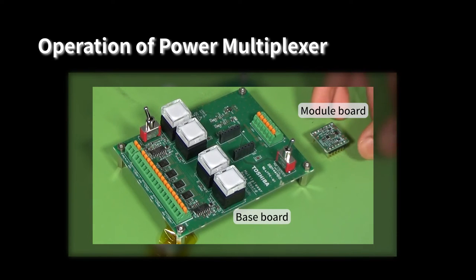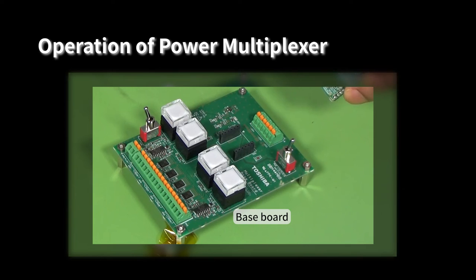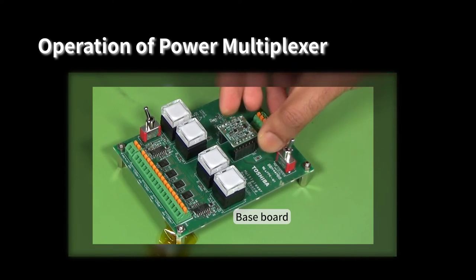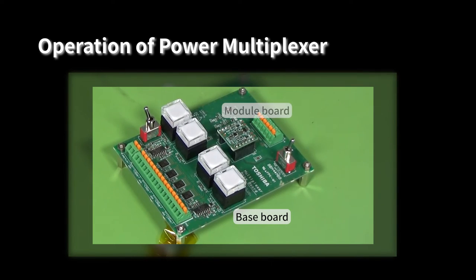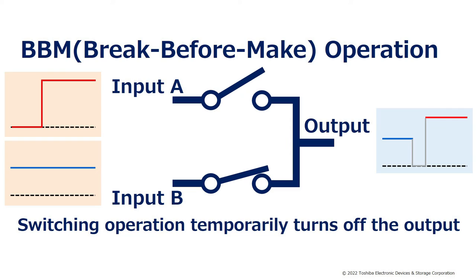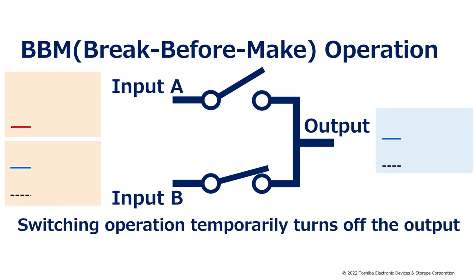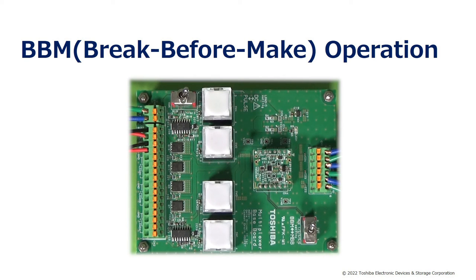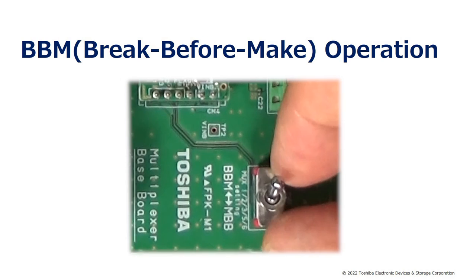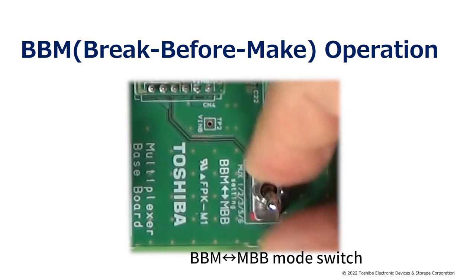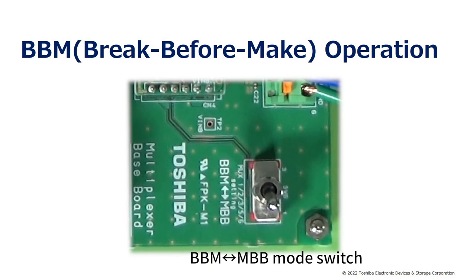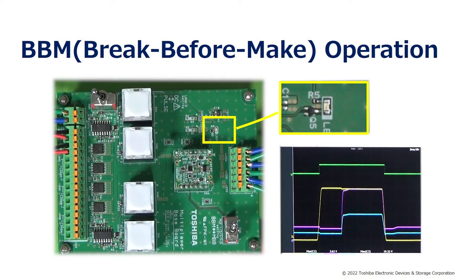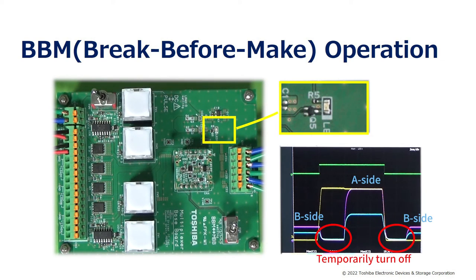The reference design circuit of the power multiplexer can be operated by attaching the module board to the base board. During BEBM — that is, break before make operation — the switching operation temporarily turns off the output. The operation mode of the power multiplexer module board can be changed using the toggle switch on the base board. It can be seen that the output is temporarily turned off when switching is performed during BEBM mode.